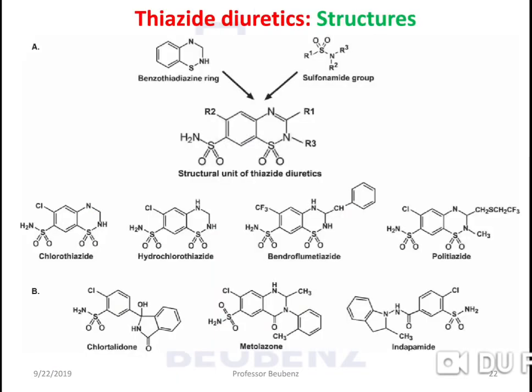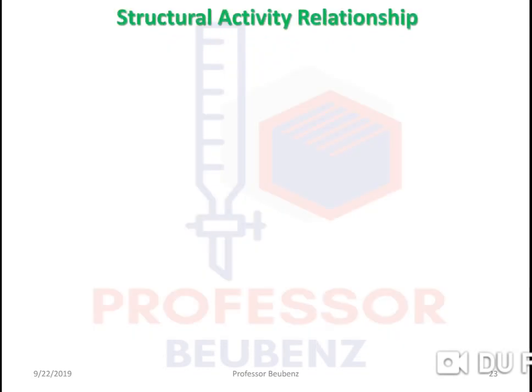Moving to thiazide diuretics: these are the structures — benzothiazide diuretics combined with a sulfonamide group, from which chlorothiazide, hydrochlorothiazide, and others were synthesized. The second series includes chlorthalidone, metolazone, and indapamide. Now we discuss the structural activity relationship of thiazide diuretics.